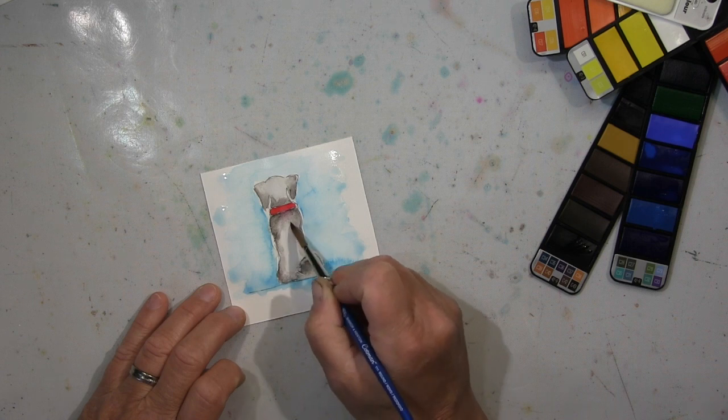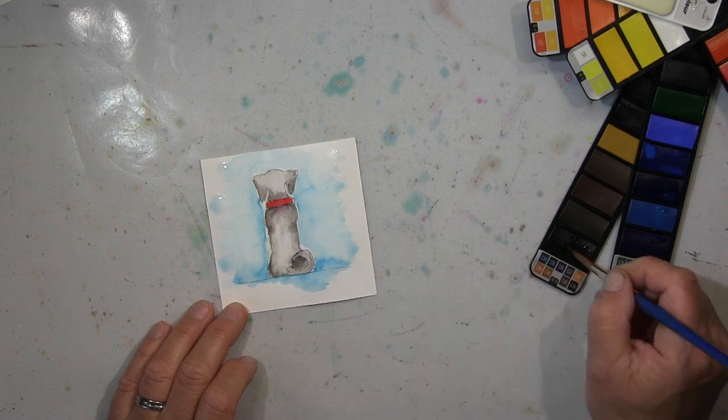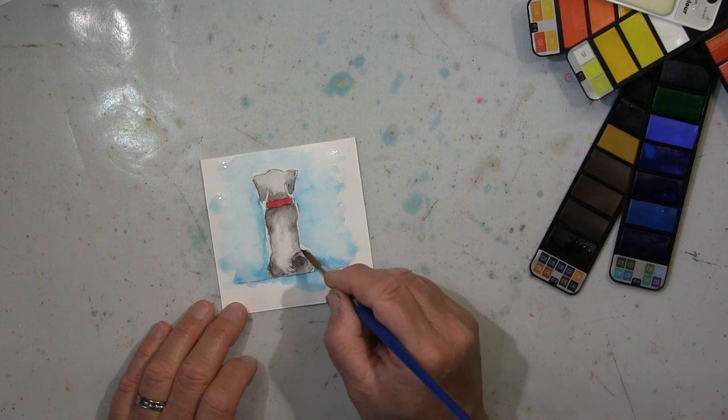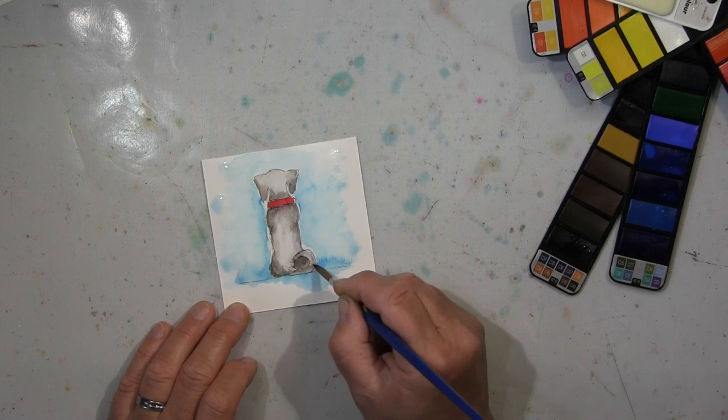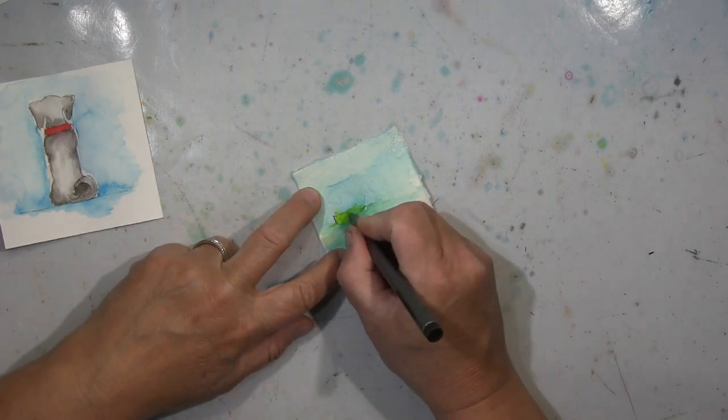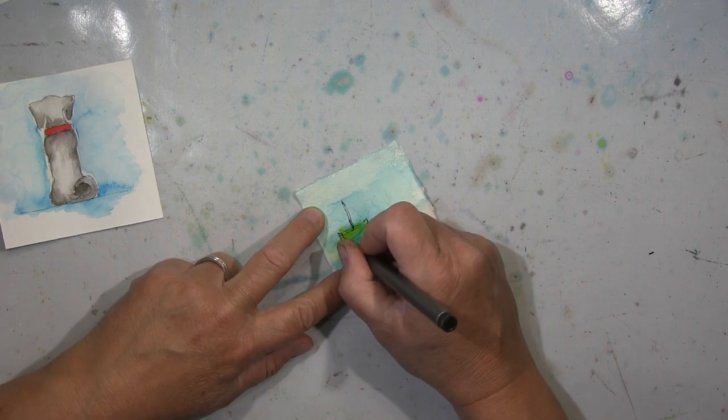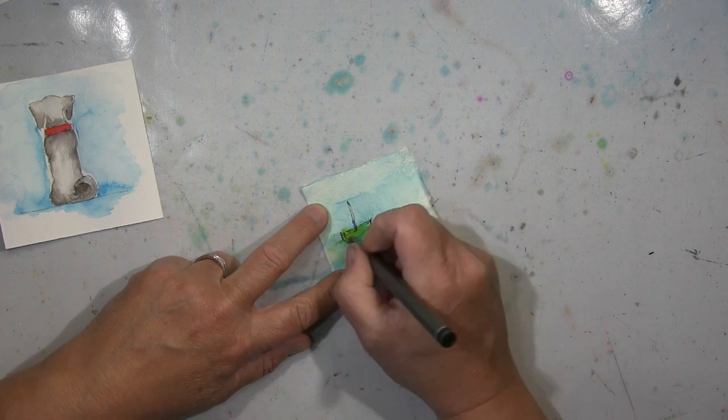So habe da ein bisschen drüber geschmiert mit dem Rot. Wenn das, kann man, wenn man das sofort macht, ein bisschen Wasser drauf, dann mit einem Tuch das abtupfen, kann man das ganz gut entfernen. Aber das muss man schon wirklich sofort machen. Wenn das eingetrocknet ist, wird das sehr viel schwieriger.